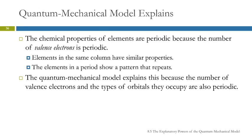The quantum mechanical model explains why the chemical properties of elements in the periodic table are periodic. They recur every so often because the number of valence electrons is periodic.